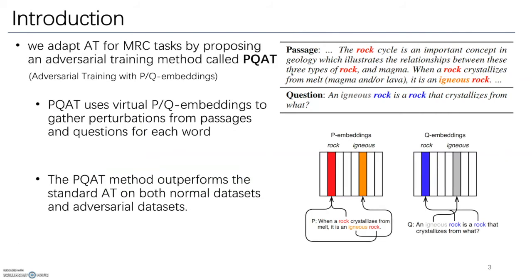In this work, we adapt AT for machine reading comprehension tasks by proposing an adversarial training method called PQAT, which considers the semantic meaning of words and differentiates the words from passages and questions.